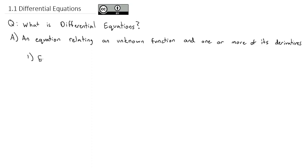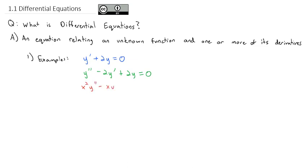Some examples of this might be something like y' + 2y = 0. This is an equation that uses both the function y and its derivative y'. Another example might be y'' - 2y' + 2y = 0. Notice this function connects y to both its first and second derivative. We can even have equations like x²y'' - xy' + 2y = 0, where y is a function of x, which also appears in the equation.